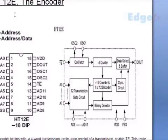Encoder HT12E has 8 address pins, from A0 to A7, and another 4 address/data lines. The data set on these 12 lines - 8 address plus 4 data - is serially transmitted.